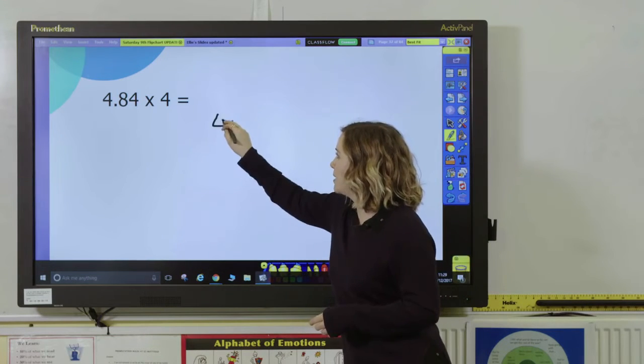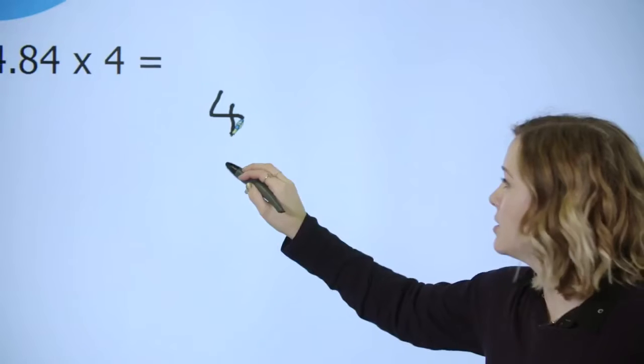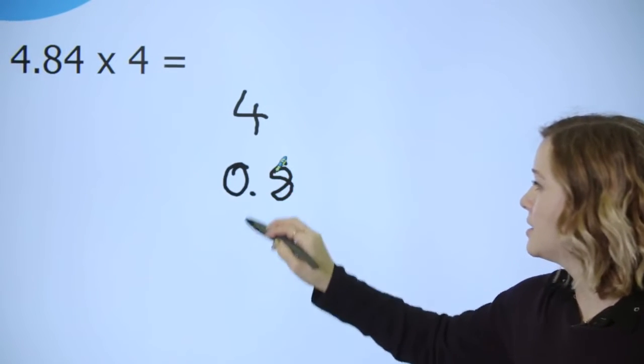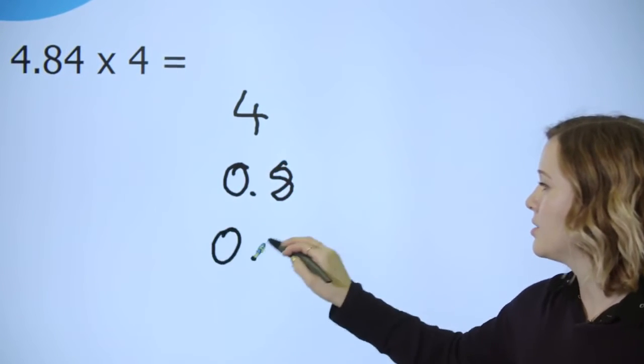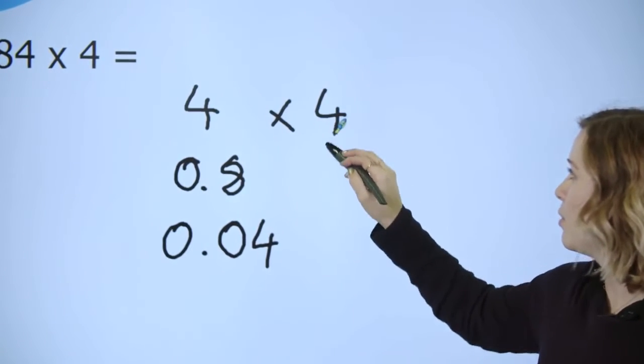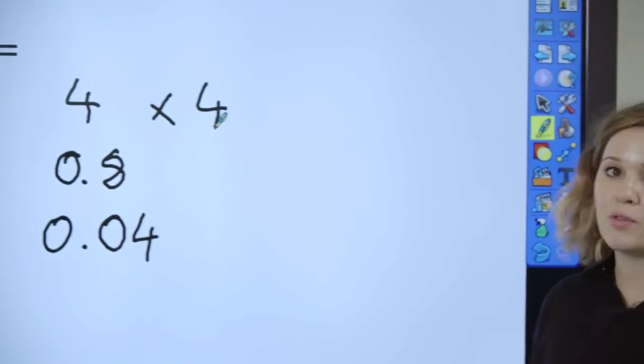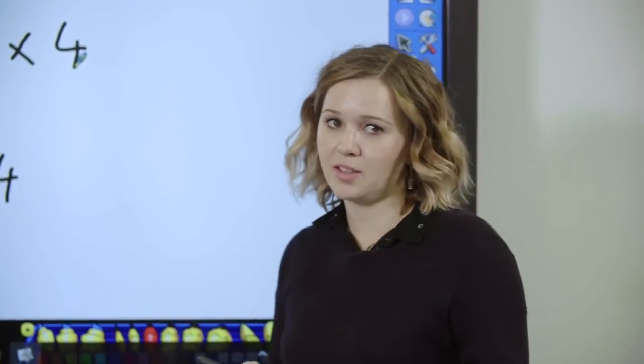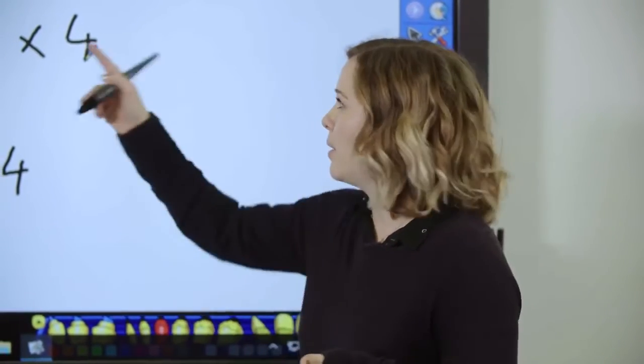So again begin by partitioning: four ones, eight tenths and four hundredths, and each of those we're going to times by four. Now when you times by four, it's the same as doing times by two then times by two. They can work out either way.